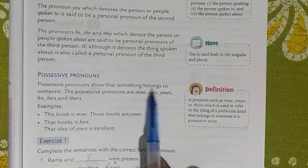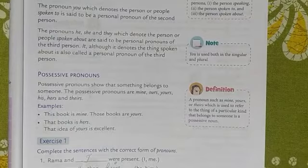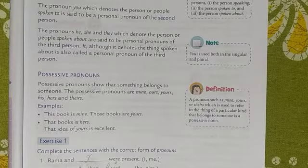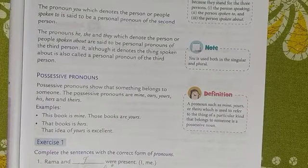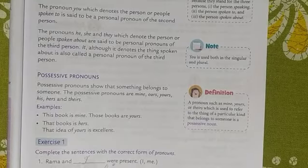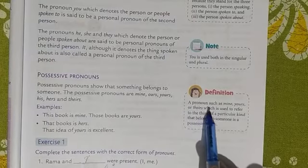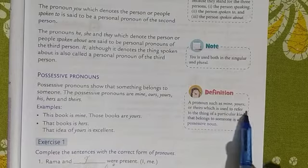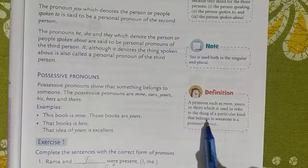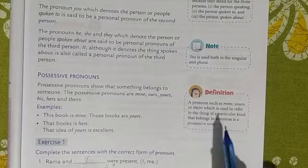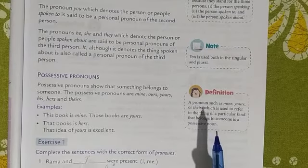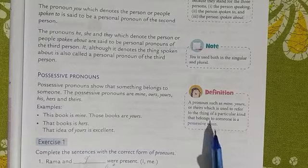Possessive pronoun shows that something belongs to someone. This means that something belongs to someone — someone straightaway commands that this thing belongs to that particular person. A pronoun such as mine, yours, or theirs, which is used to refer to things of a particular kind that belong to someone, is called a possessive pronoun.